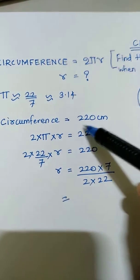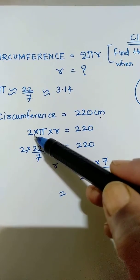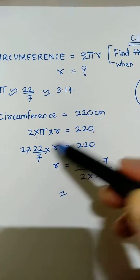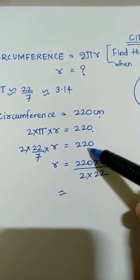Suppose we have given circumference to be 220 centimeters. So we write the formula 2πr is equal to 220. 2 into 22/7 into r is equal to 220.